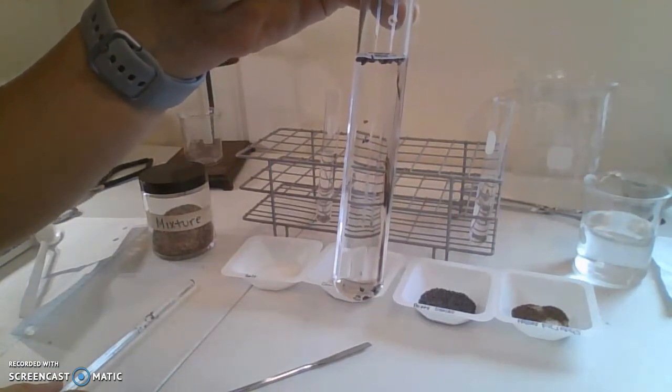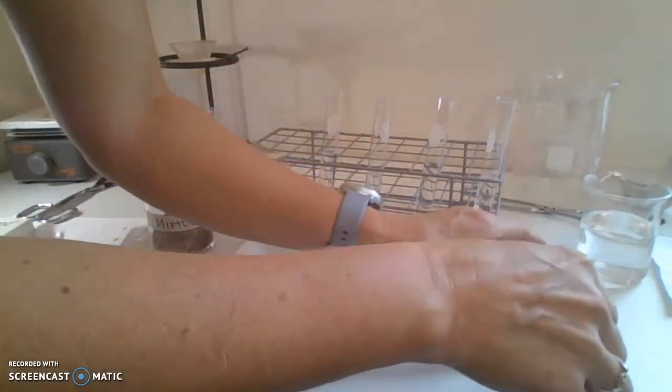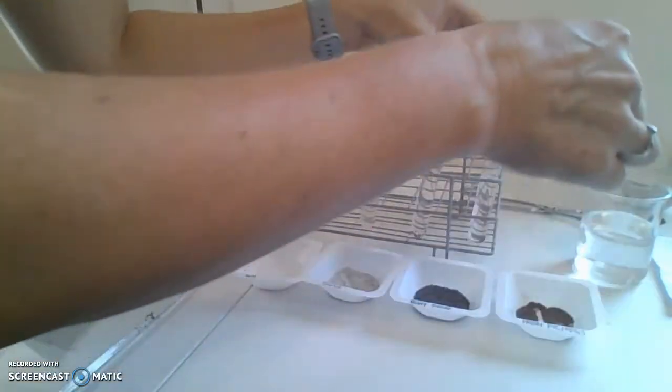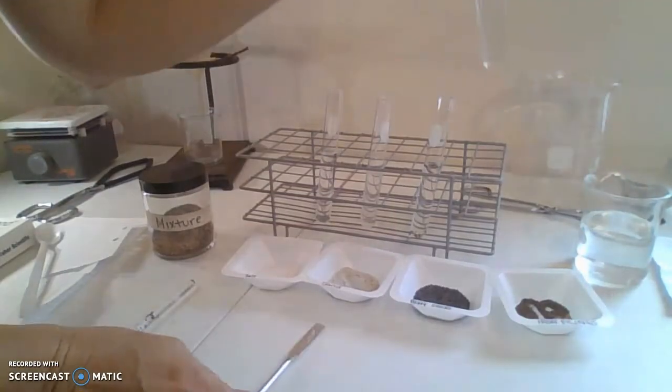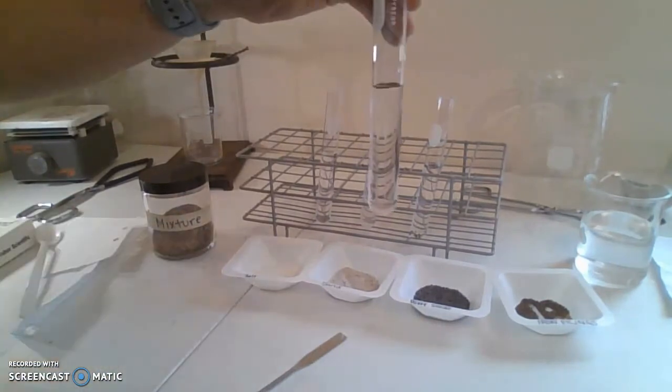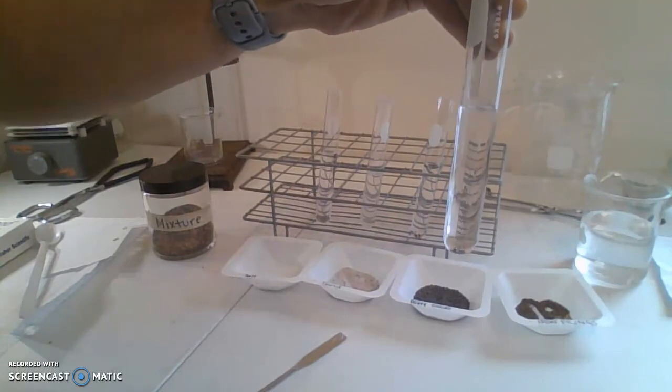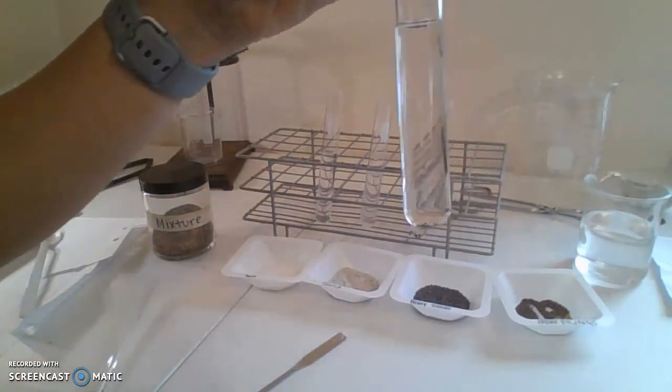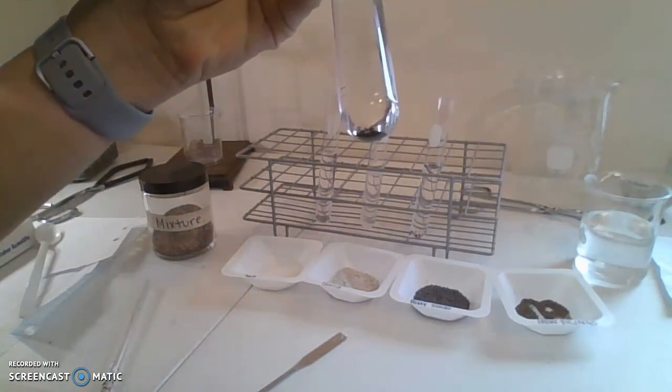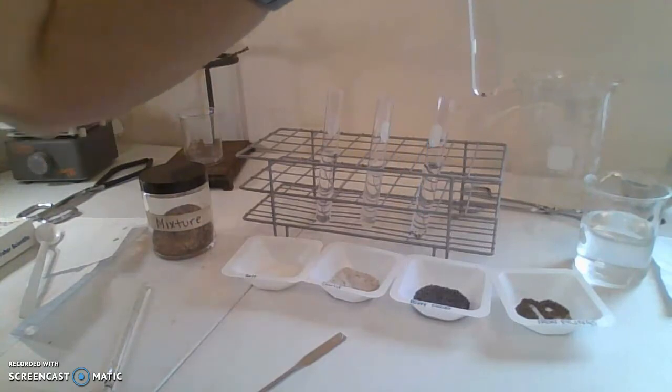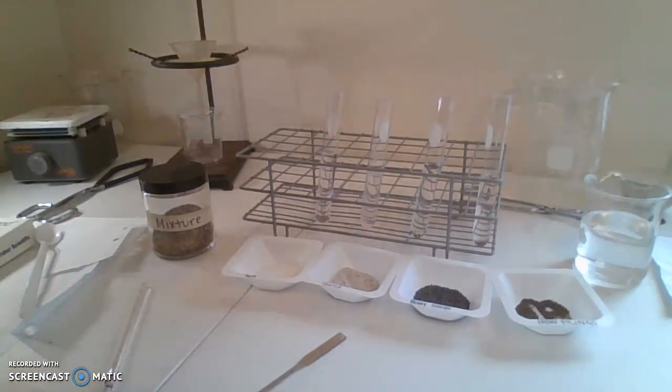Next we have iron filings. We're going to add them to water. Mix, mix, mix. You actually see that the iron filings sink down to the bottom of the test tube and do not dissolve. Record your data in the next slide.